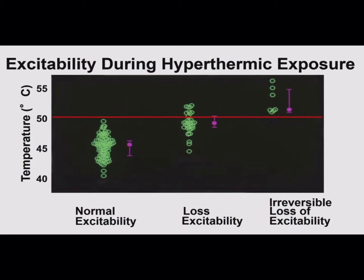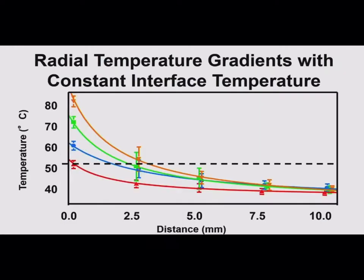In terms of temperature — this is what we're heating the tissue to — we know from work from David Haynes and others that you really have to heat the tissue to above 50 degrees Celsius to result in irreversible loss of excitability. You can heat the tissue up a bit and it can appear inactive but then recover. That's what we want to avoid. We want to try and get the tissue temperature above 50 degrees.